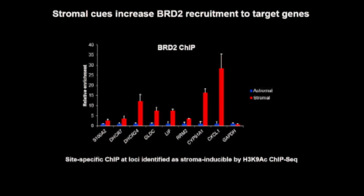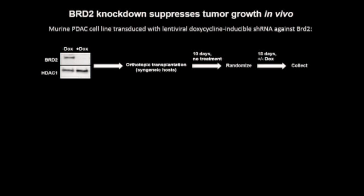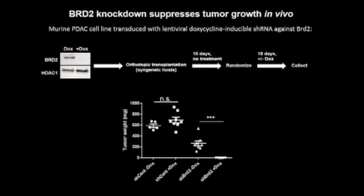I next looked at the effect of inducible BRD2 knockdown on pancreatic cancer growth in vivo, specifically knocking down BRD2 in the epithelial compartment. I generated an inducible BRD2 knockdown cell line, transplanted it into the pancreas, allowed tumors to establish for 10 days, and then kept mice on or off doxycycline. Doxycycline had no effect on tumor growth in control hairpin cell lines, but in the BRD2 knockdown cell line, doxycycline significantly reduced pancreatic tumor growth.